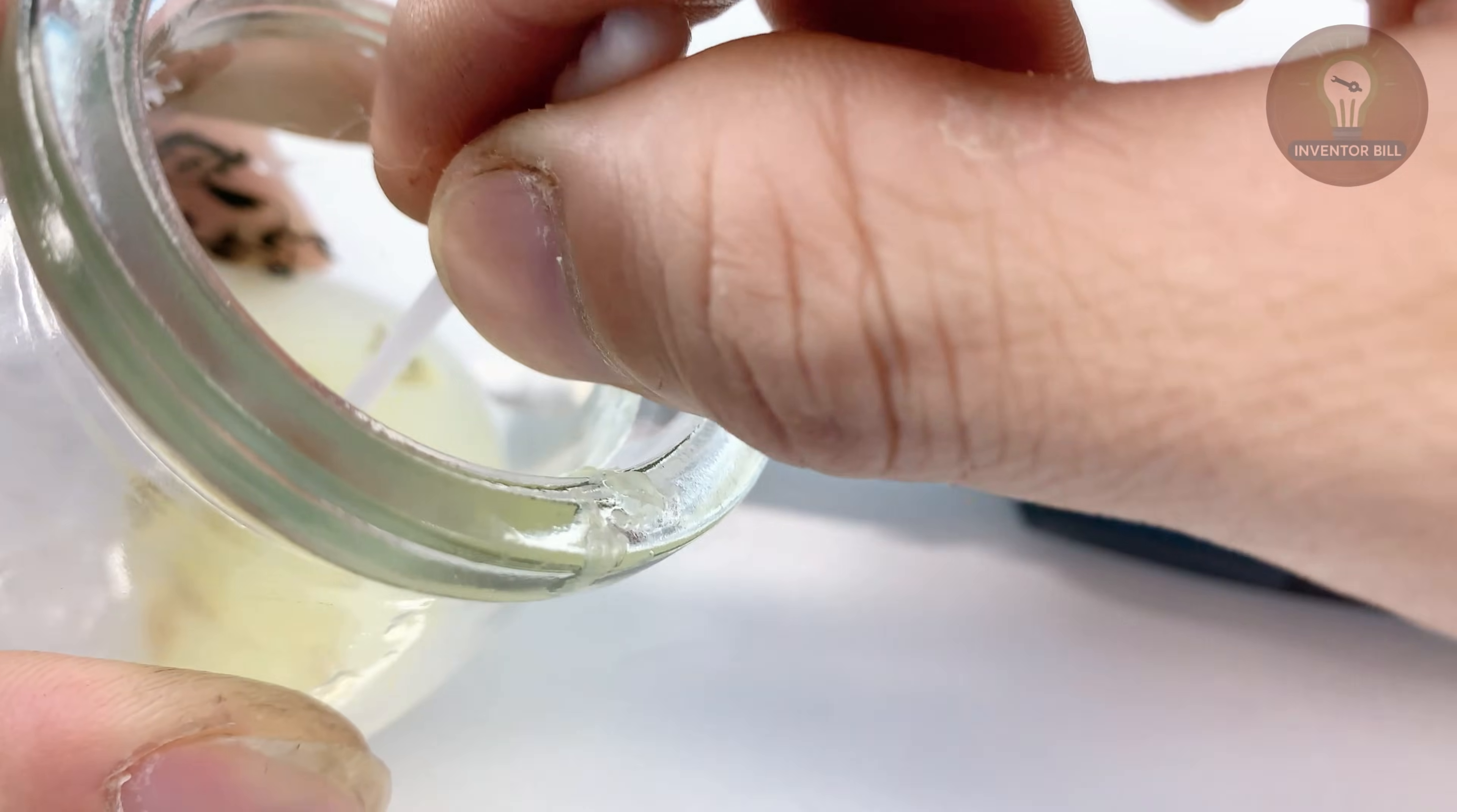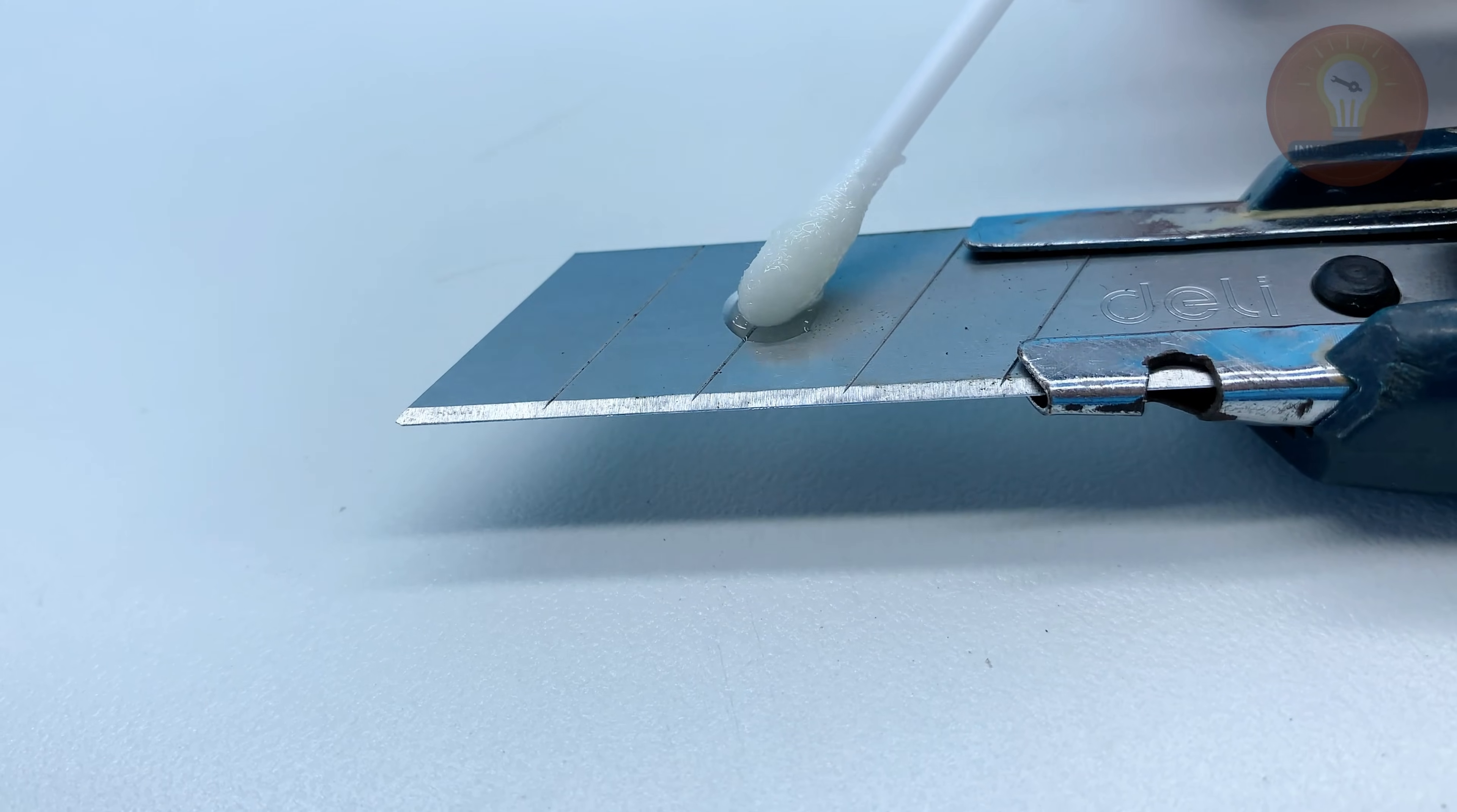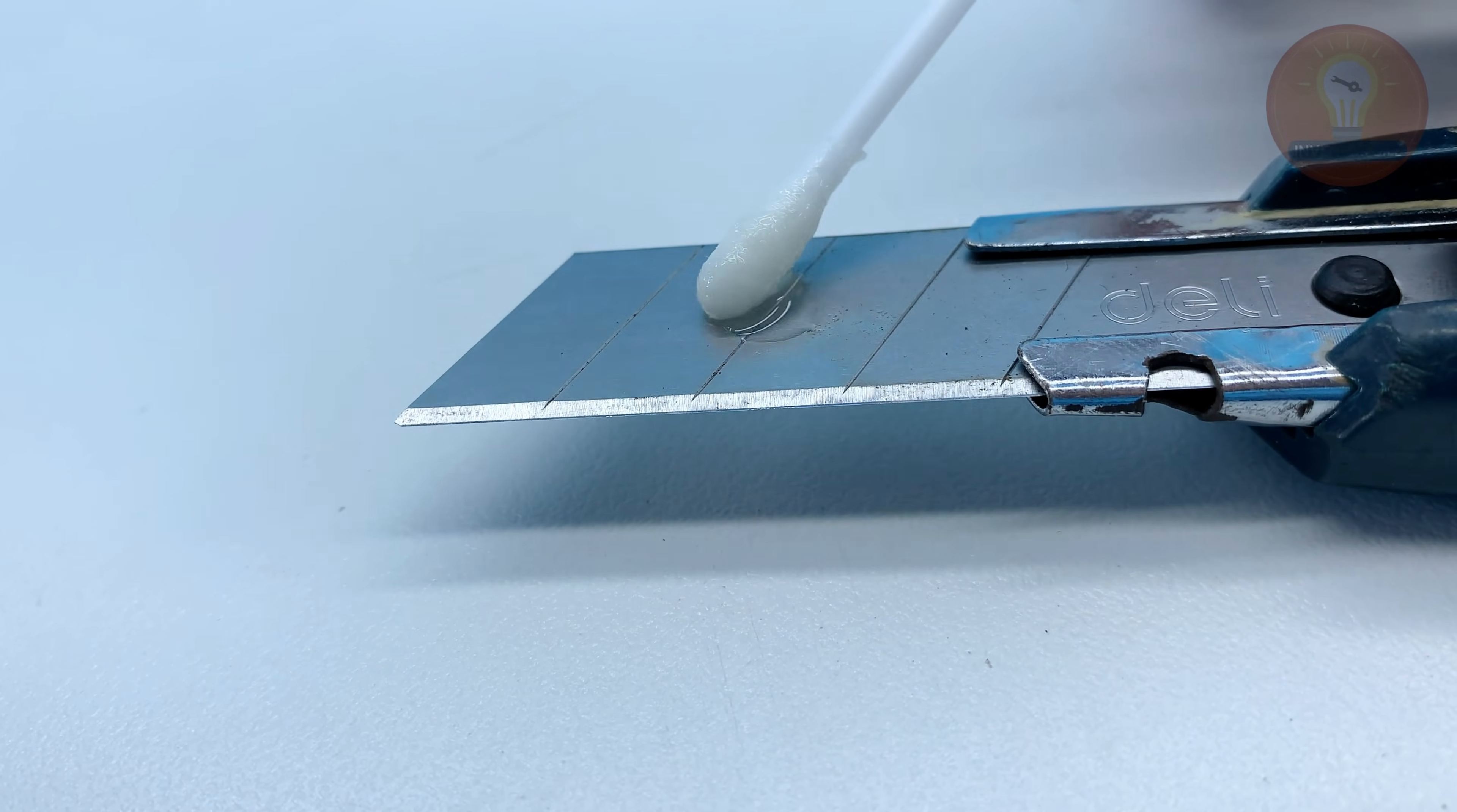Once it's ready, dip a cotton swab into the solution. We'll use it in the next step to help the solder flow smoothly and stick firmly.